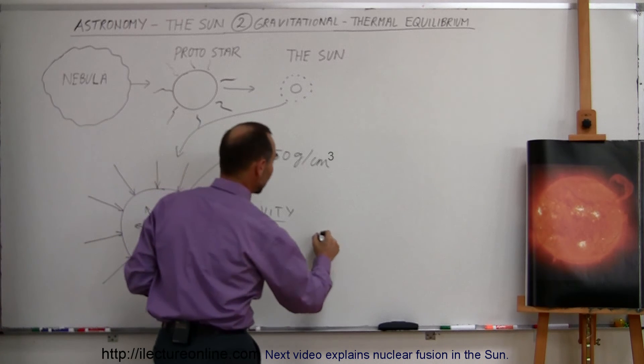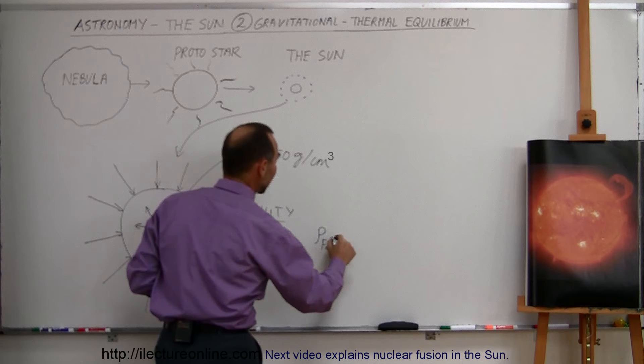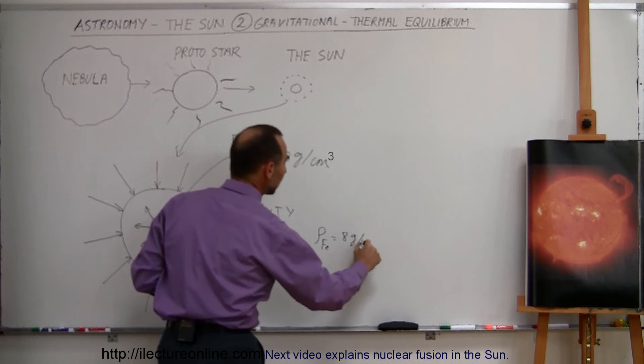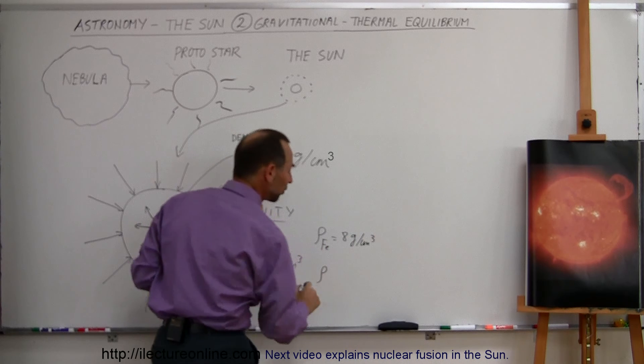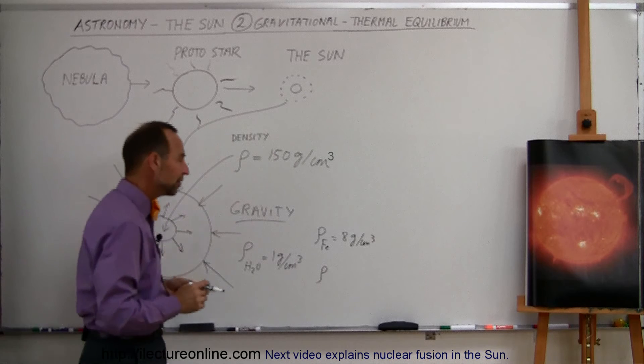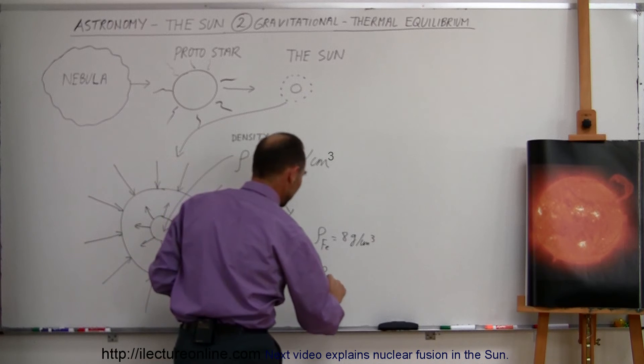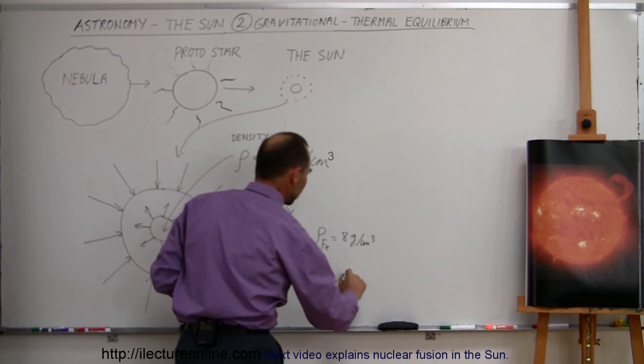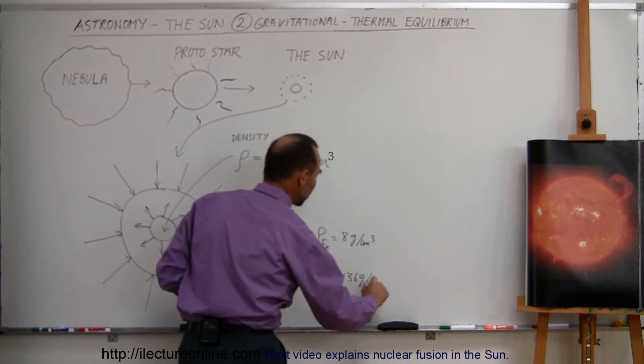To give you some more comparisons, the density for iron is about 8 grams per cubic centimeter. The density for mercury, which of course is very, very dense, heavy material, that liquid material, liquid metal, for mercury Hg is about 13.6 grams per cubic centimeter.